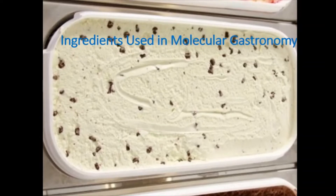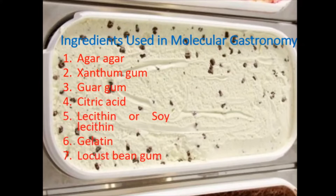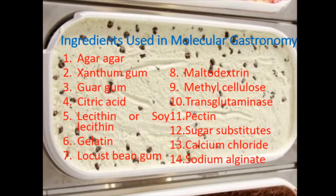Ingredients Used in Molecular Gastronomy. Apart from the normal cooking ingredients, molecular gastronomy involves using some special kinds of ingredients that include Agar Agar, Xanthan Gum, Guar Gum, Citric Acid, Lecithin or Soya Lecithin, Gelatin, Locust Bean Gum, Maltodextrin, Methyl Cellulose, Transglutaminase, Pectin, Sugar Substitutes, Calcium Chloride, and Sodium Alginate. All these ingredients were quite often used in the food processing industry, but their use by chefs in the kitchen was very rare.